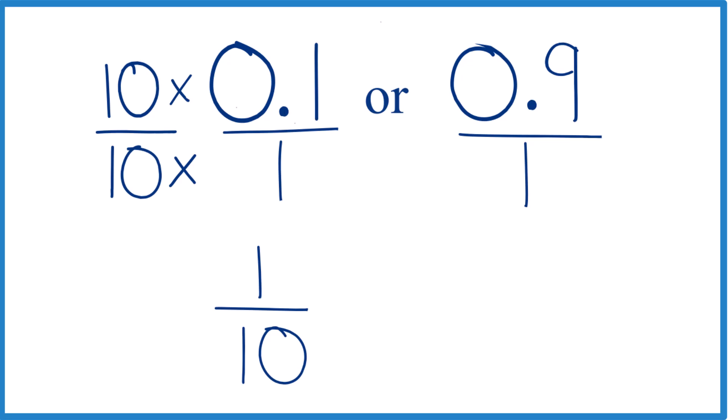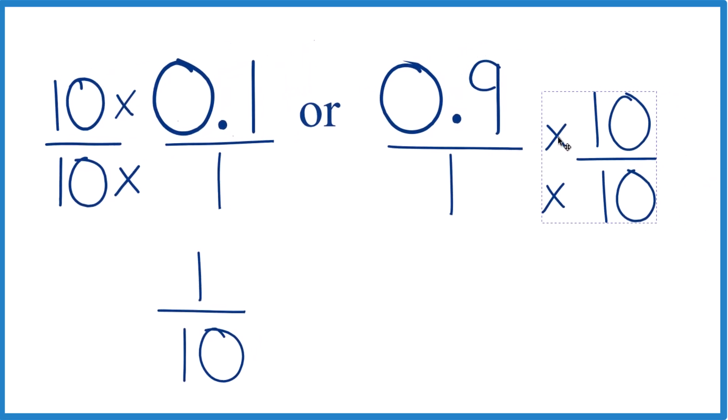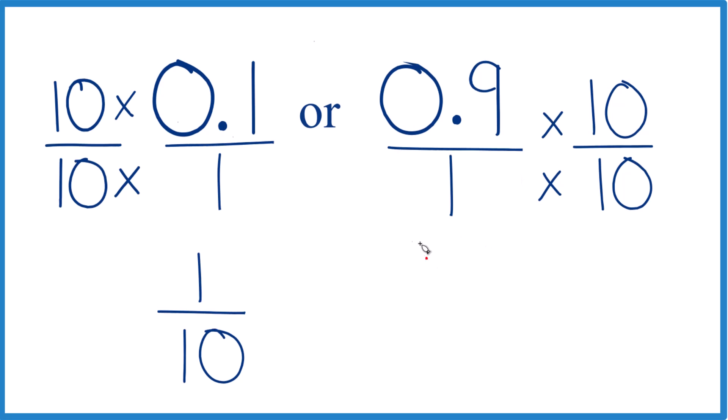Here, for 0.9, what we'll do is we'll multiply the numerator and denominator by 10 as well. 0.9 times 10, that's going to give us 9. 1 times 10 is 10.